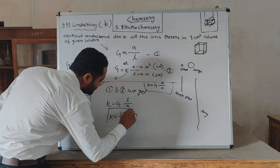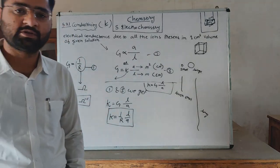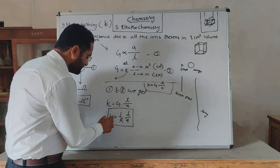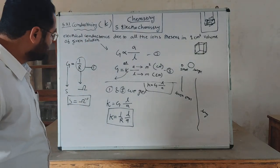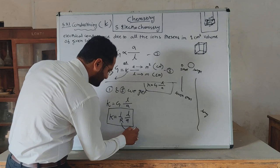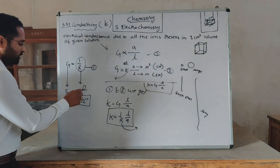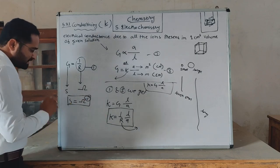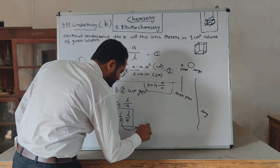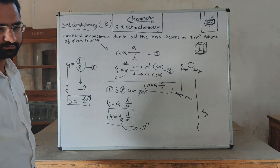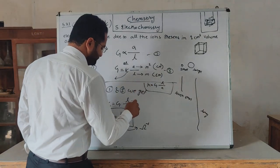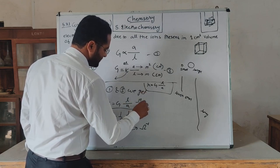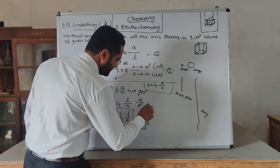This quantity K is called conductivity. The unit of conductivity is derived from its formula. R is the resistance, and resistance has the unit ohms. So the unit of conductivity is called the siemens per centimeter or the conductivity unit.